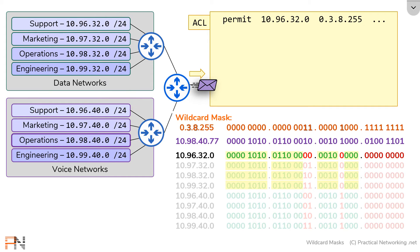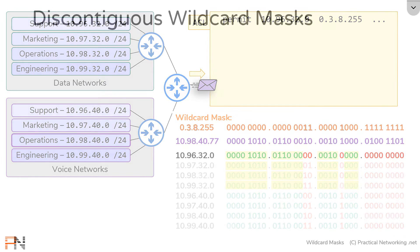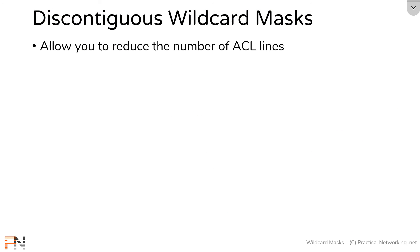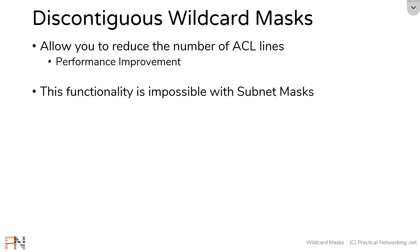That is the beauty of discontiguous wildcard masks. It allows you to reduce the number of lines in your access control lists, which can lead to a performance improvement as your router doesn't have to process as many lines for every packet coming through its interfaces. This is the thing that's impossible to do with subnet masks — this is why wildcard masks exist. Remember, a subnet mask by rule must be ones followed by zeros; it doesn't allow alternating sets of ones and zeros, whereas wildcard masks are not limited by that rule.